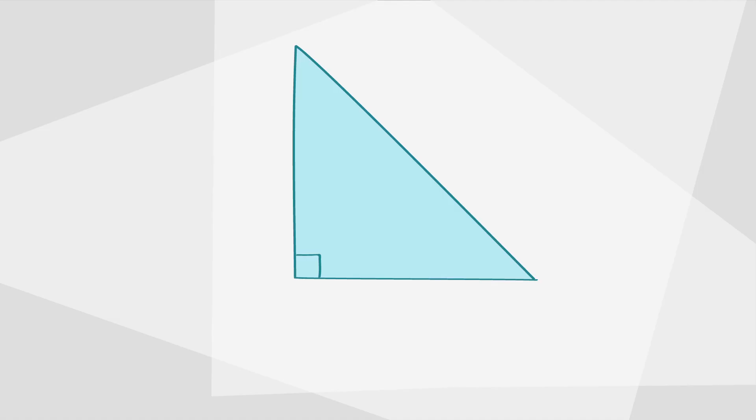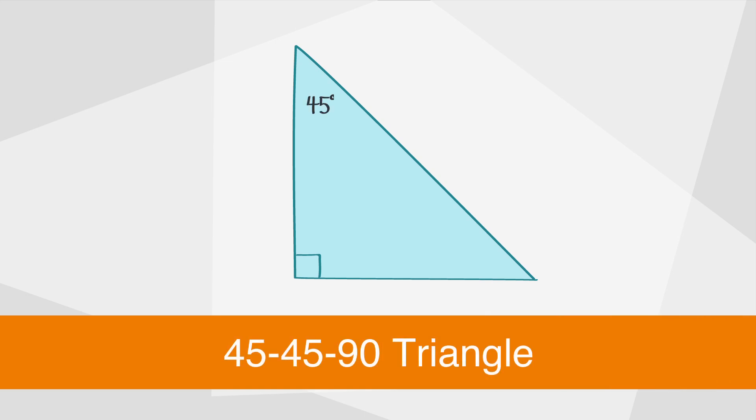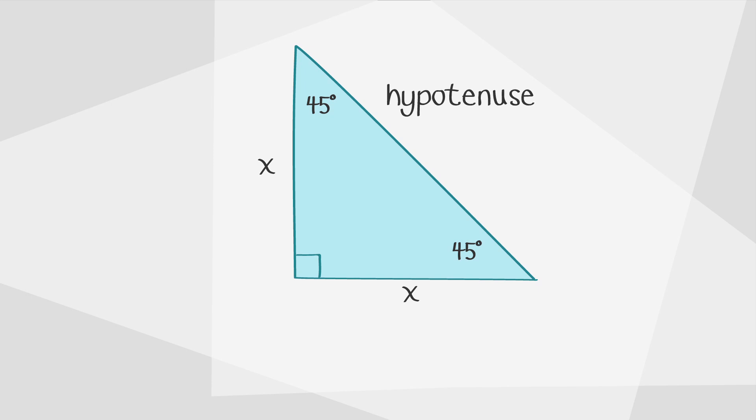Let's start with the 45-45-90 triangle. In this triangle, the sides opposite the 45-degree angles are the same and each has a length of x. The hypotenuse, which is opposite the 90-degree angle, has a length of x times the square root of 2.